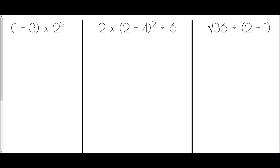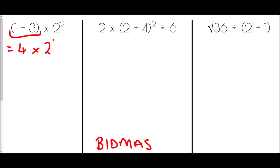Now our final set of examples, keeping BIDMAS in mind throughout. In the first question, (1 + 3) × 2², we have brackets, and brackets always come first. Whatever is inside the bracket is done first: 1 + 3 = 4. That result is multiplied by 2². Continuing with BIDMAS, we have indices next: 2² = 4. So we get 4 × 4 = 16.